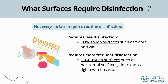What surfaces require disinfection? Not every surface requires frequent disinfection — it's typically only required when even the smallest amount of harmful microbes can threaten human or public health. We separate surfaces into two categories: low touch and high touch. Low touch surfaces, those we don't touch often, are not typically disinfected unless contaminated — for example, with bodily fluids. An example of low touch surfaces would be floors and walls.